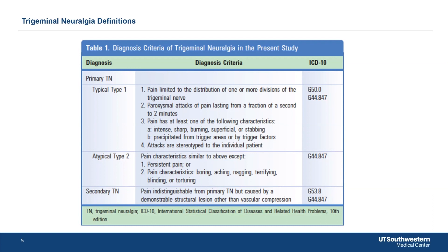The trigger can be anything from touching the face, to wind, to eating, chewing, drinking, sometimes just positional changes. The attacks are very stereotyped. When someone comes in and says the pattern is different every time, it makes you think it might not be trigeminal neuralgia.